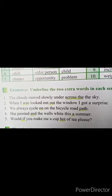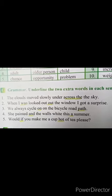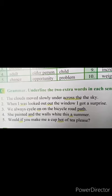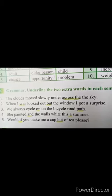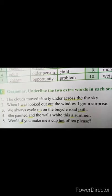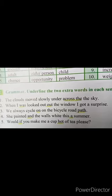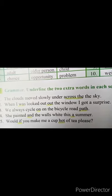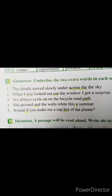Second is: 'When I was looked out out the window I got a surprise.' جب میں نے کھڑکی سے باہر دیکھا تو میں نے ایک surprise پایا. یہاں پر 'was looked' grammatically wrong آتا ہے — so 'was' کو underline کریں گے اور extra 'out' کو underline کریں گے. Correct form: 'When I looked out the window I got a surprise.'